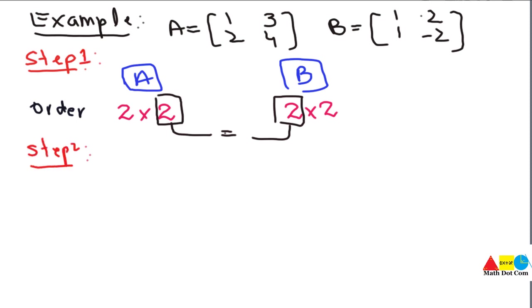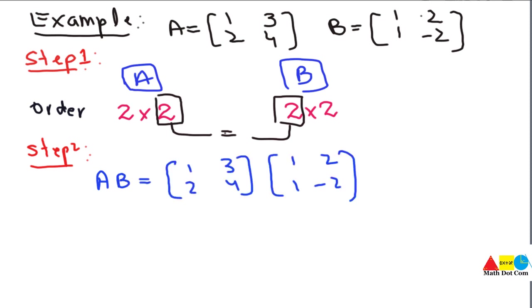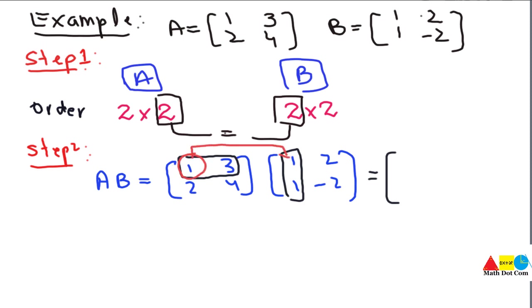Step 2: we multiply A and B using the dot product concept. Dot product means we multiply the matching elements. We start from the first row and multiply it with the first column. The dot product gives us: the first element multiplied with the first element here — we write 1×1 — and then add them together, plus this element multiplied with this element, giving 3×1.